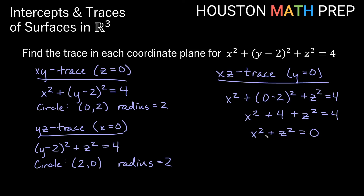So what is a circle with radius 0? It turns out this is actually just a point. Since x squared plus z squared equals 0 and neither square can be negative, the only way this works is when x and z are both 0. So this is really just the point (0, 0) — the origin in the xz-plane. Our sphere therefore intersects the xy-plane and the yz-plane in circular cross-sections with radius 2, but it only intersects the xz-plane at the single point, the origin.